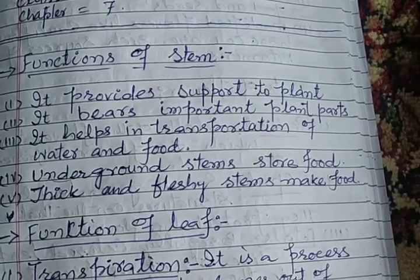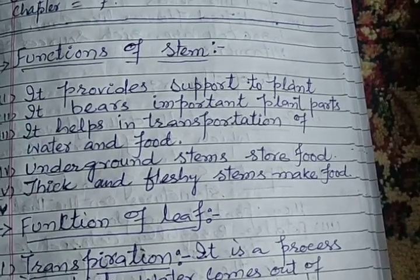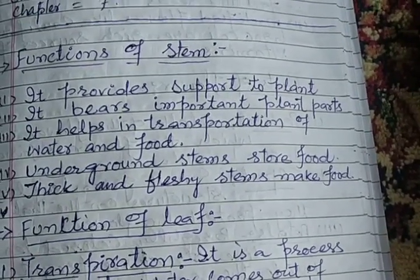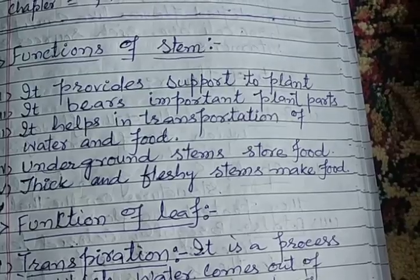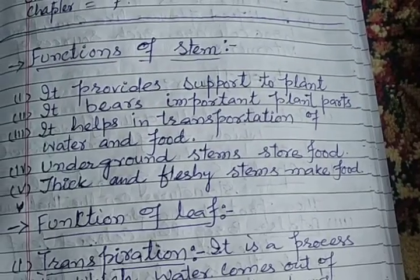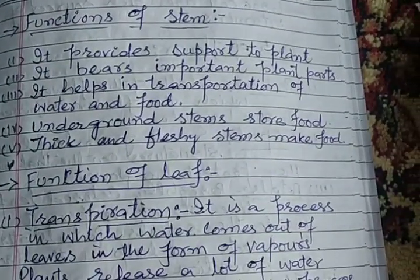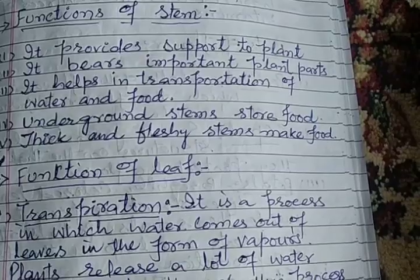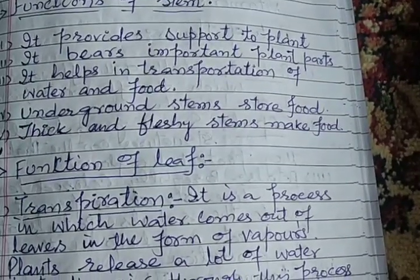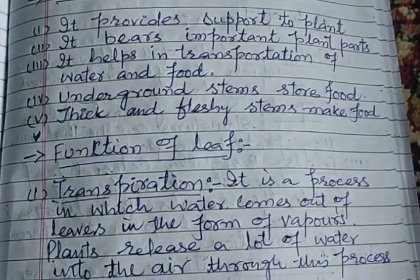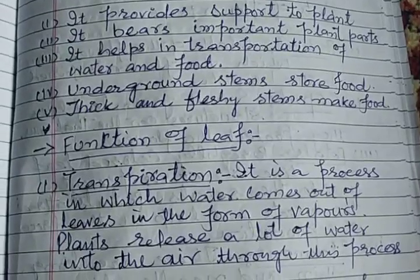The stem is responsible for transportation of water and food. Some plants have underground stems that store food. Thick and fleshy stems also make and store food.